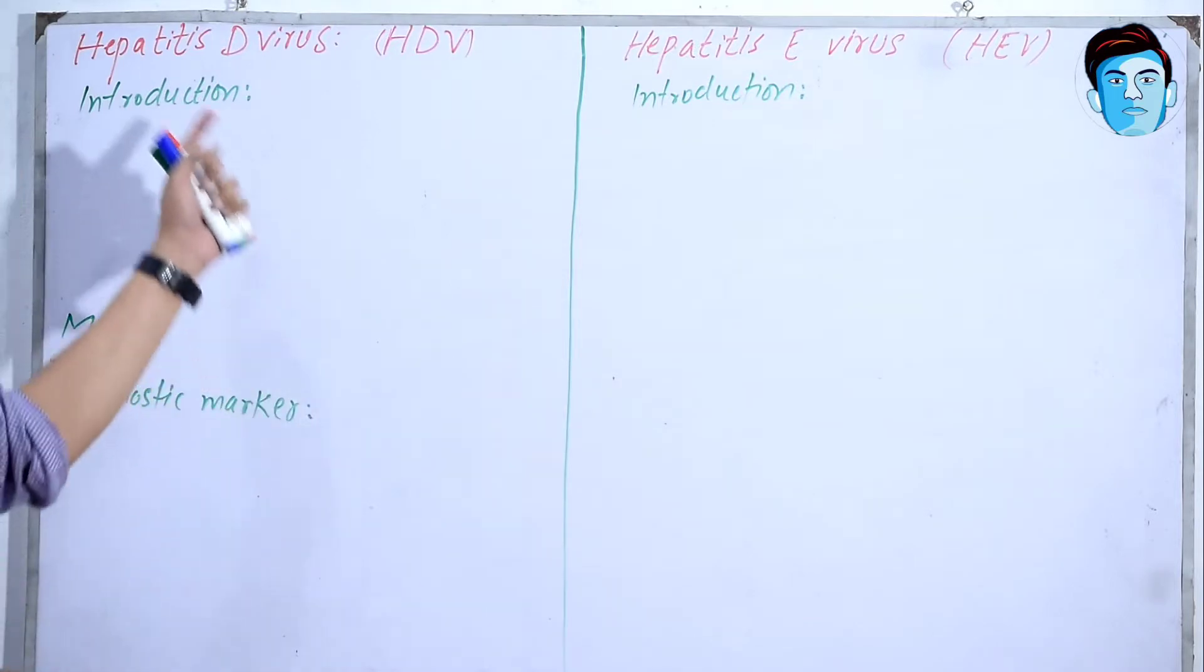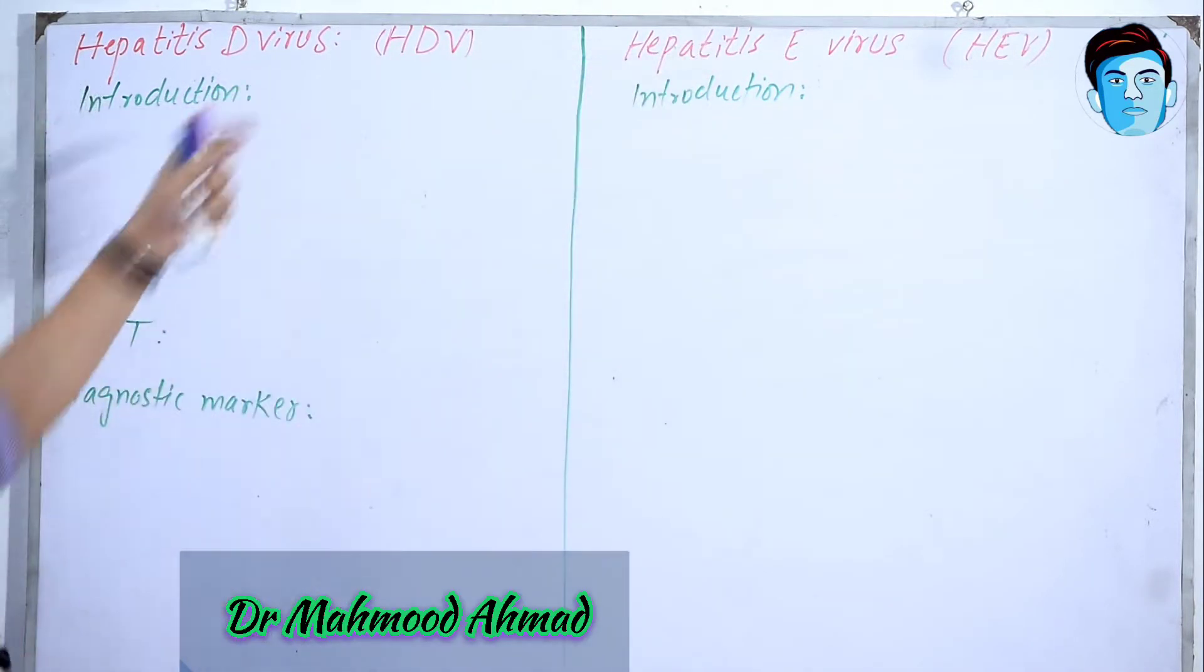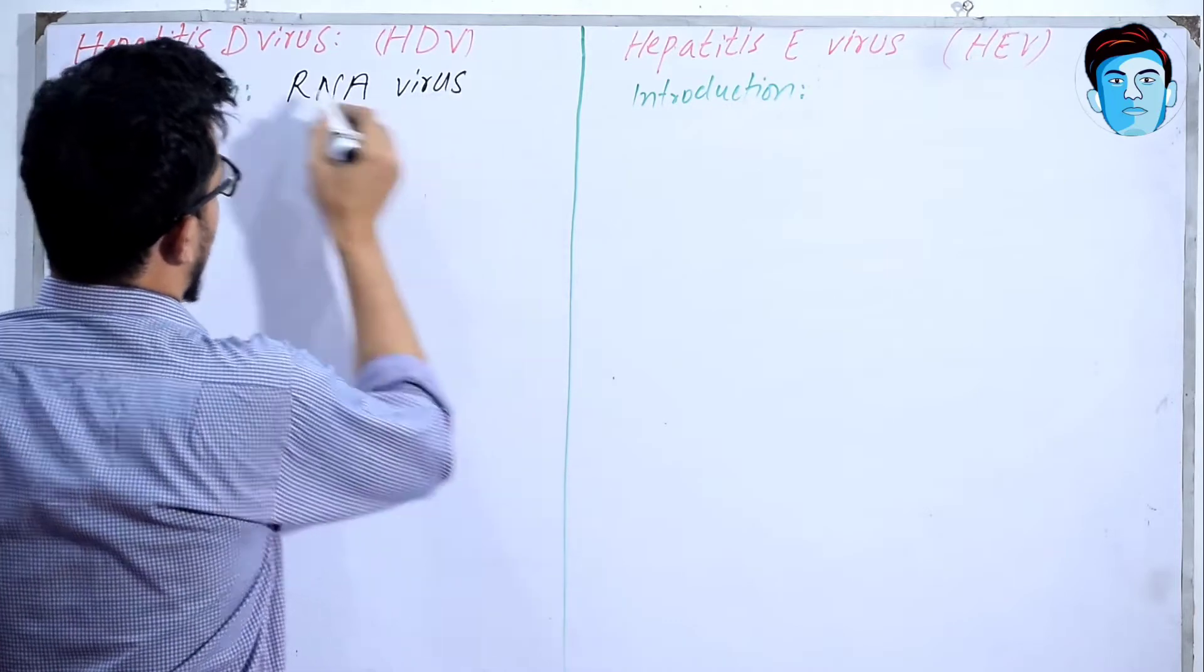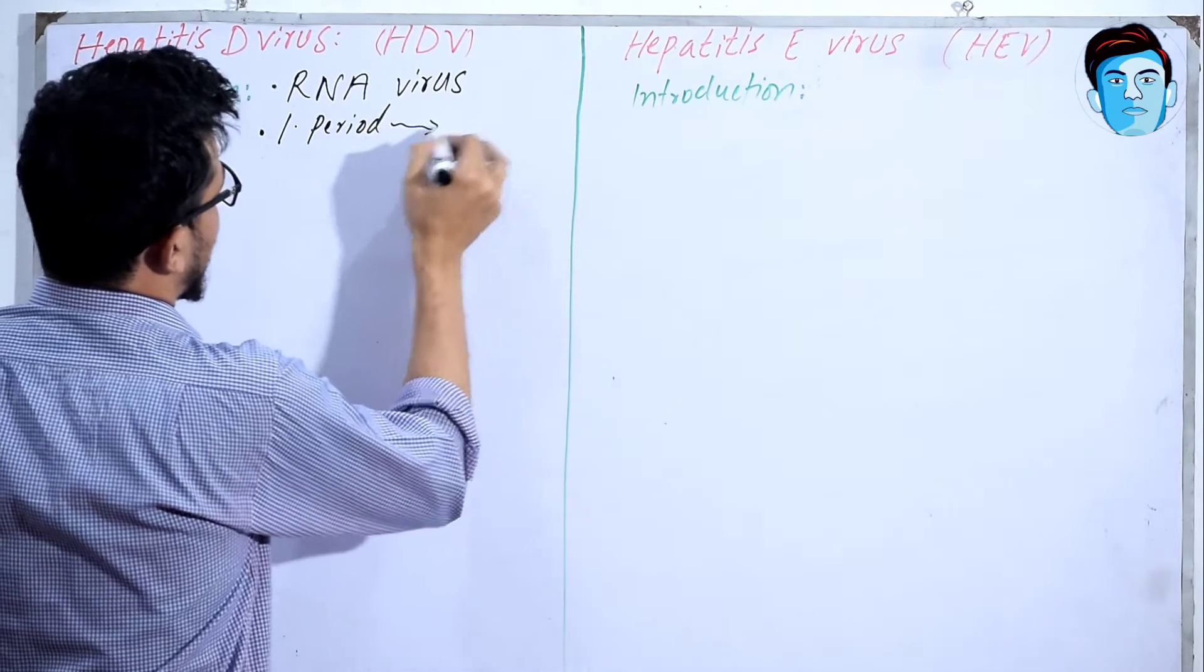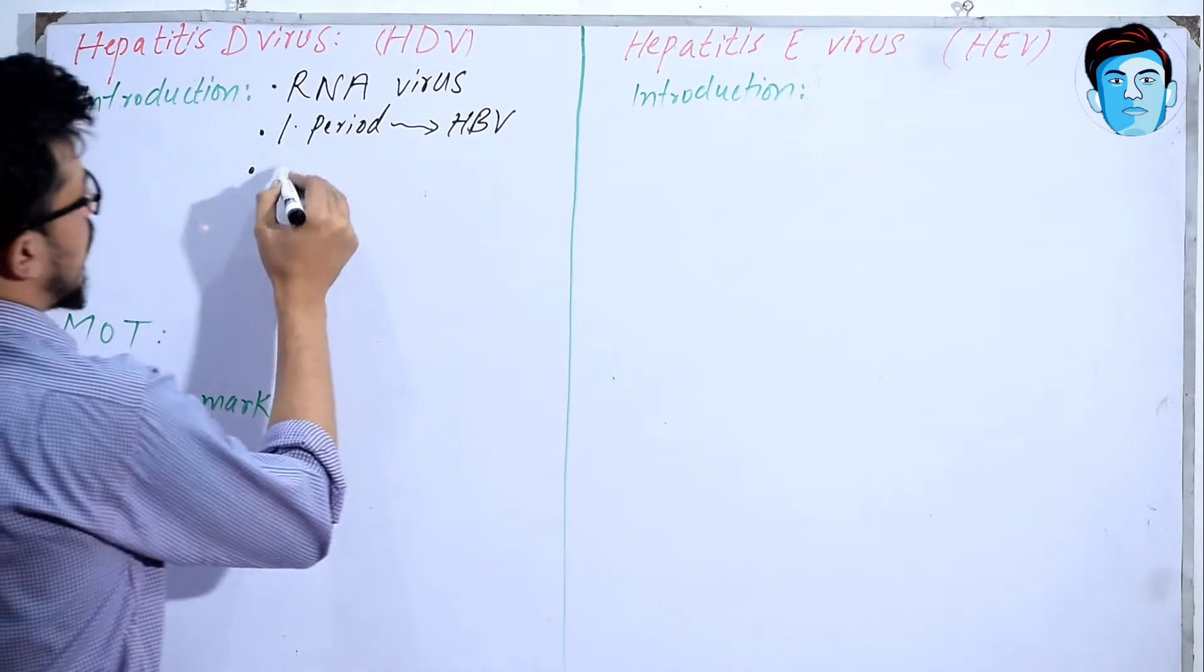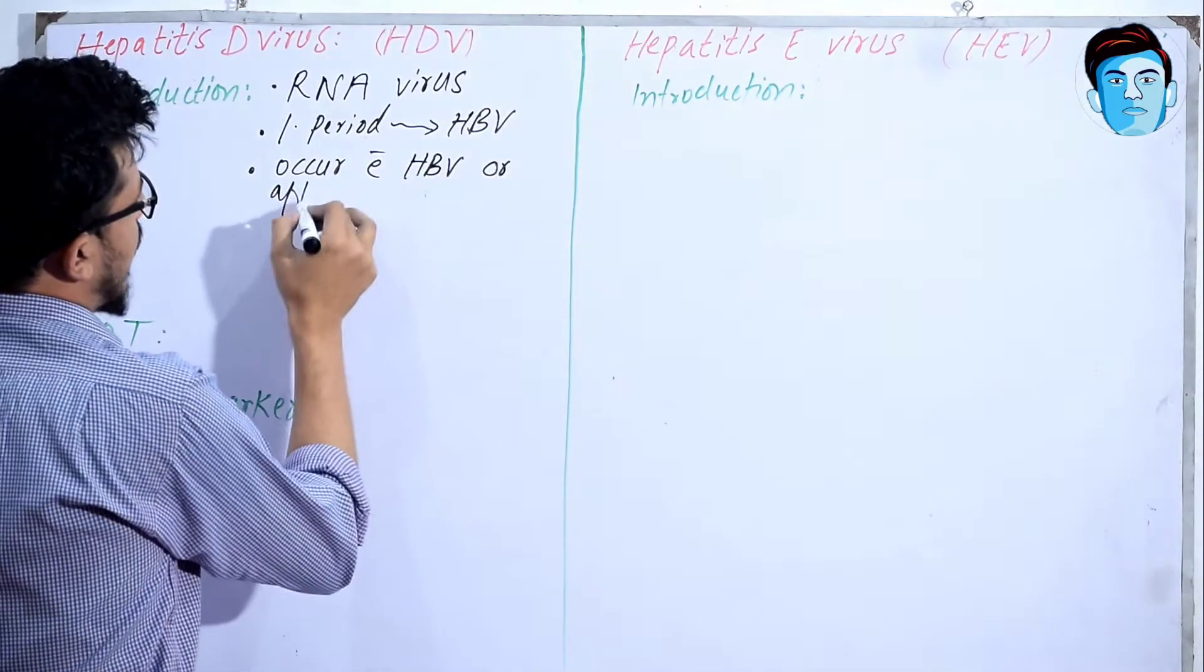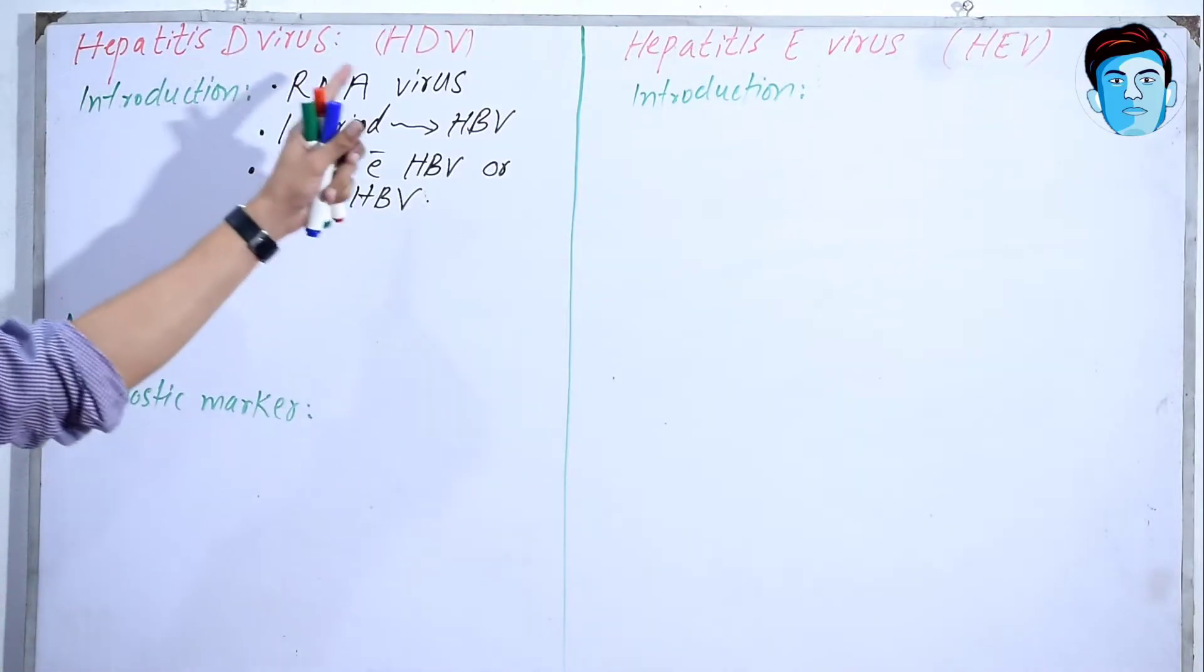Assalamu alaikum doctors. Now let's talk about Hepatitis D virus and Hepatitis E virus. Hepatitis D virus is an RNA virus. Its incubation period is similar to Hepatitis B virus, and Hepatitis D virus occurs with Hepatitis B virus or after Hepatitis B virus.